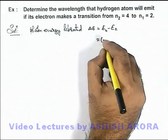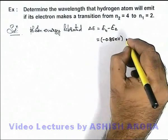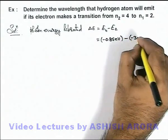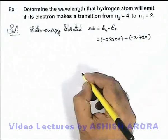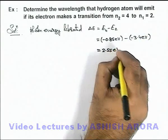The fourth energy level energy is -0.85 eV, and that of the second energy level is -3.4 eV. So on calculation this will give us 2.55 eV.